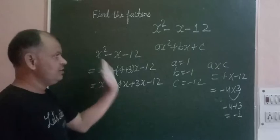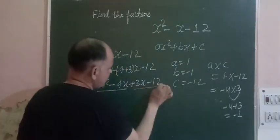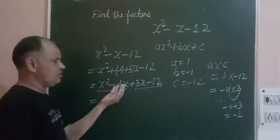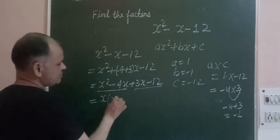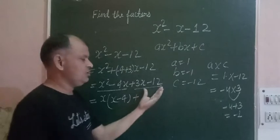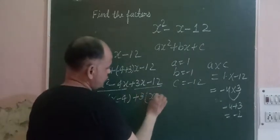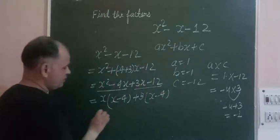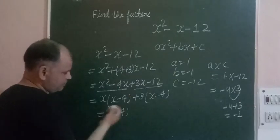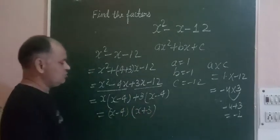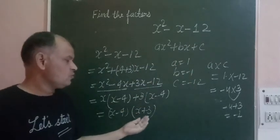Now the 3-term expression breaks into 4 terms. We take 2 terms simultaneously to make factors. We take x common from the first two terms and 3 from the last two. So x minus 4 is common in both. The factors of the given expression x square minus x minus 12 are x minus 4 and x plus 3.